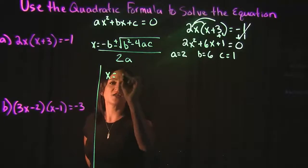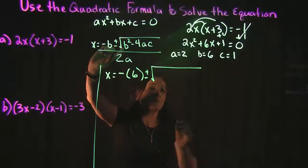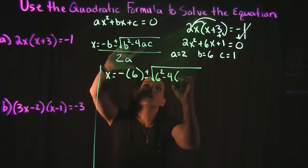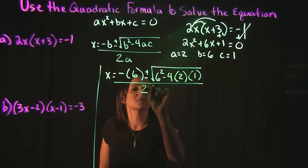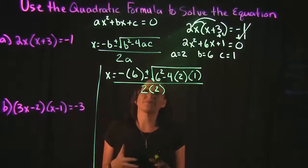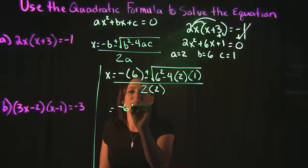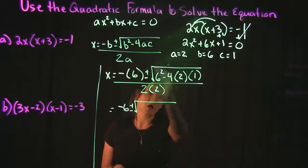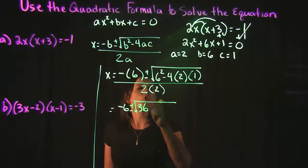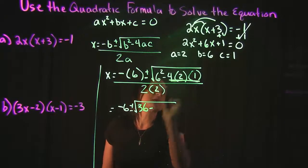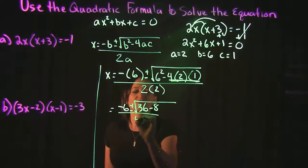Plugging into our formula, x equals negative b — b is 6, so that's negative 6 — plus or minus the square root of b squared (that's 6 squared), minus 4 times a (which is 2) times c (which is 1), all divided by 2 times a, which is 2. Now we simplify carefully. In the numerator we have negative 6. Working under the radical: 6 squared is 36, minus 4 times 2 times 1. 4 times 2 is 8, and 8 times 1 is 8. That's all over 2 times 2, which is 4.